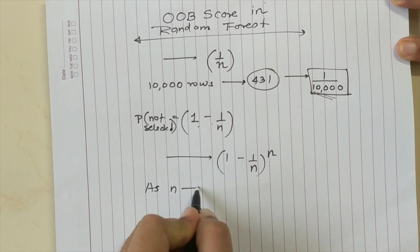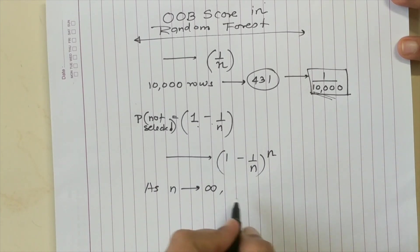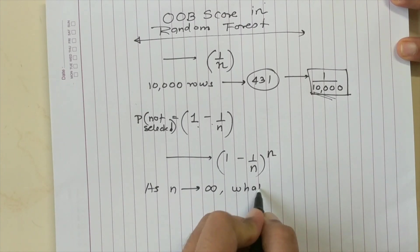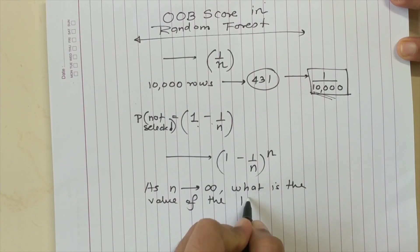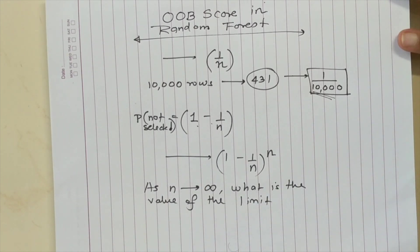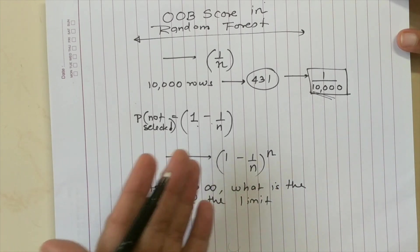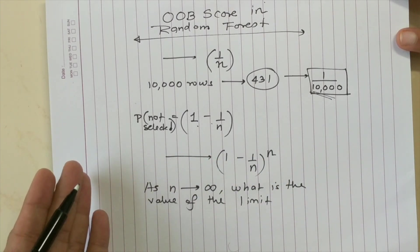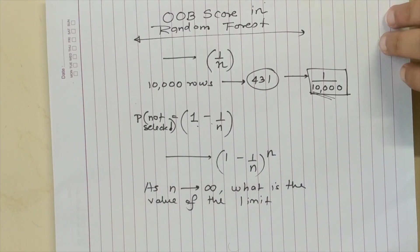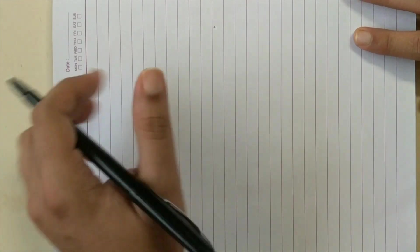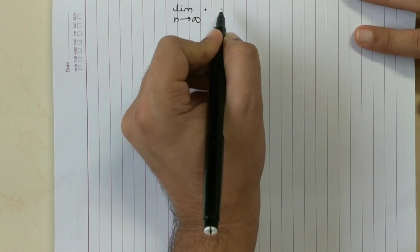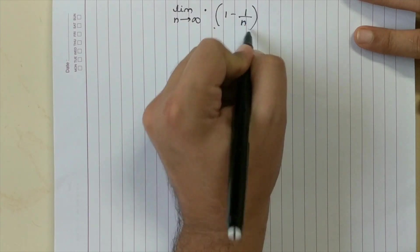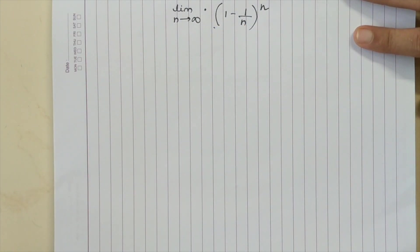As N tends to infinity, what is the value of the limit? Or essentially, what is the probability of not selecting a sample at all in any draw while creating a bootstrap sample? Let's go to the derivation part. I again write the equation: I want to find limit N tends to infinity, 1 minus 1 by N to the power N.